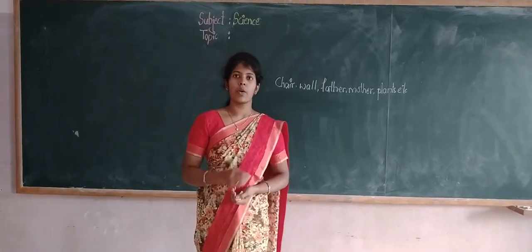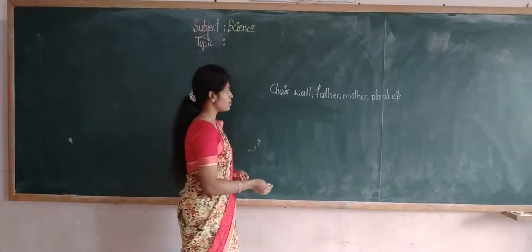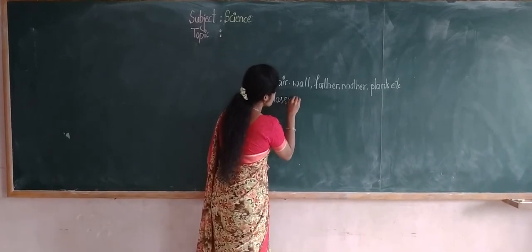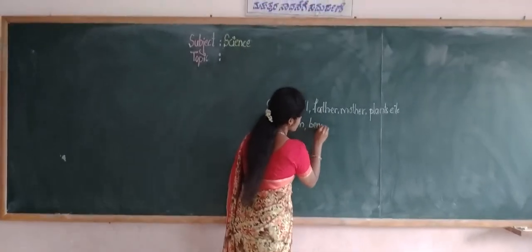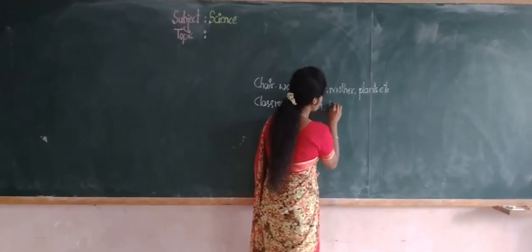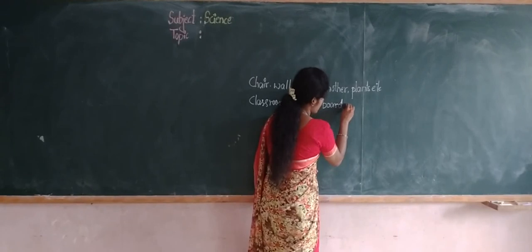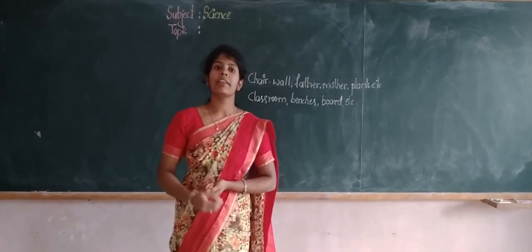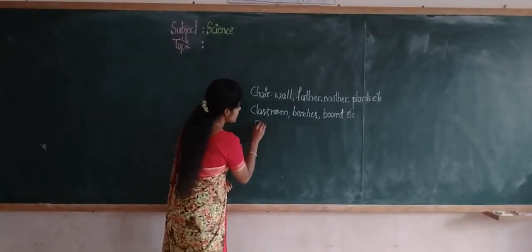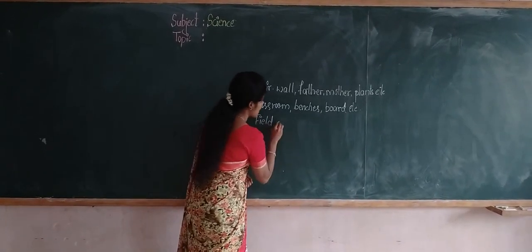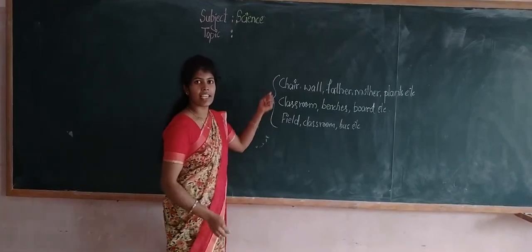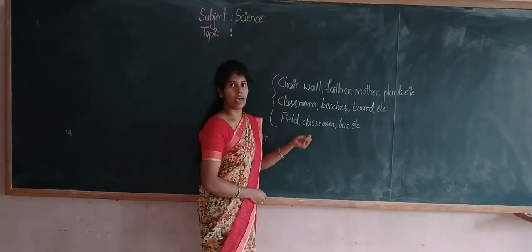Tell me, students, which are the things you have observed in your surrounding platform? Classroom, benches, bowls, etc. These are the examples for things which are in our surroundings.